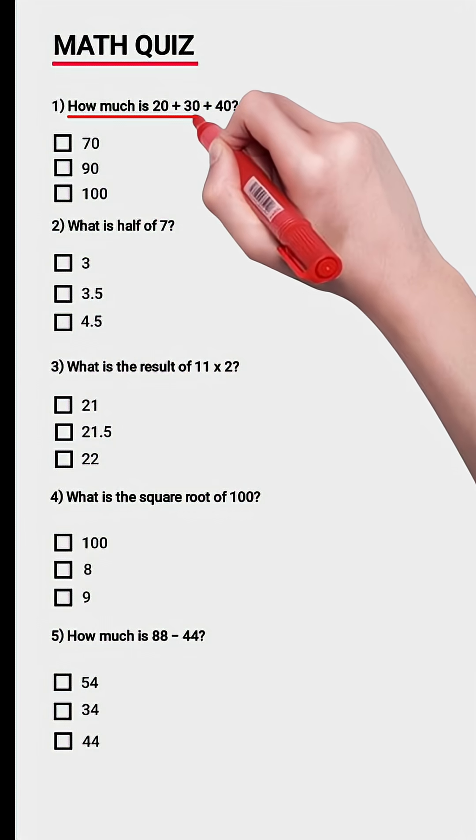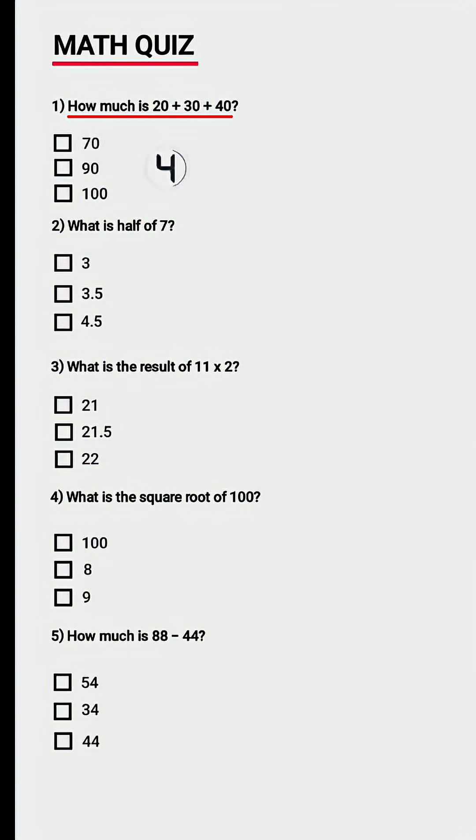Question 1. How much is 20 plus 30 plus 40? 90. Question 2. What is half of 7? 3.5.